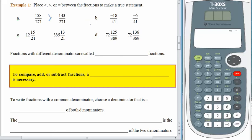You can see I left the sneaky ones for you. They might be a little bit sneaky, but they're not that bad. Let's look at letter B. We have negative 18 forty-firsts compared to negative 6 forty-firsts. Which one is larger? When we were comparing negative numbers before, whichever number was to the right on the number line is greater. So hopefully you said that negative 18 forty-firsts is less than negative 6 forty-firsts.